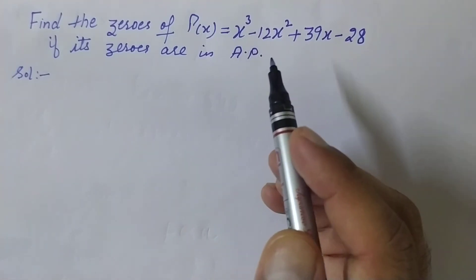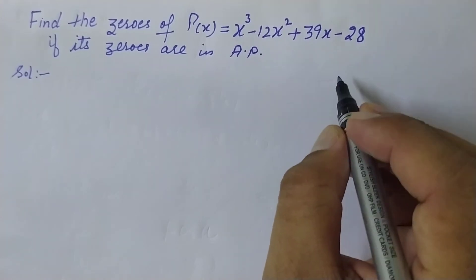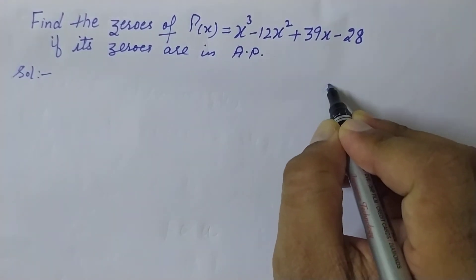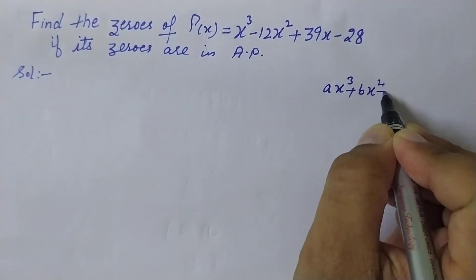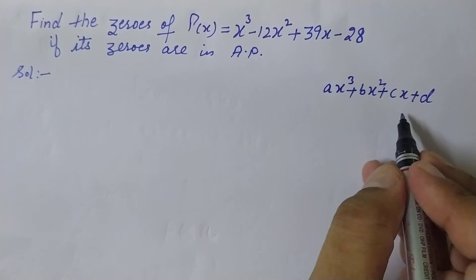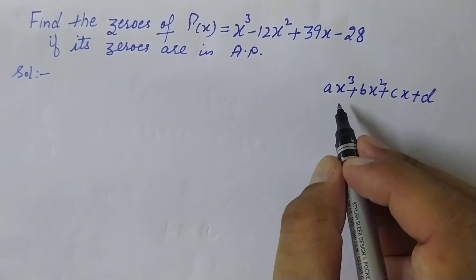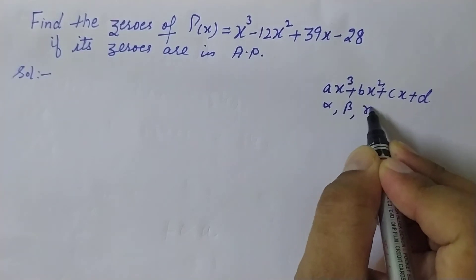First of all, we need knowledge of cubic polynomials. The standard form of a cubic polynomial is ax³ + bx² + cx + d. This is the standard form. It has 3 maximum zeros. Suppose its zeros are α, β, and γ.